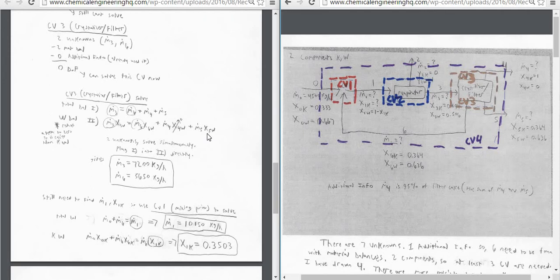And then stream 5 is M5, X5W. So we have two unknowns. We can solve this simultaneously. You can plug M3 directly into here in the W balance, and then solve for M6, and then solve for M3 after that. So we can get that M3 is equal to 7,200 kilograms per hour, and M6 is equal to 5,650 kilograms per hour.